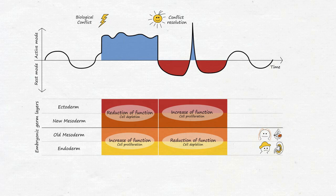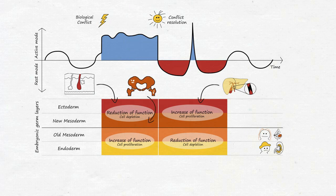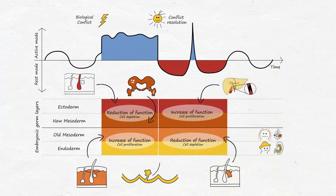Be it a jaundice due to bilirubin backlog because the ectodermal bile duct is swollen due to the process that enables cell proliferation in the conflict-resolved phase. Or hair loss due to reduced function of the ectodermal hair follicles in the conflict-active phase. Or bone loss due to reduced function of the new mesodermal bone in the conflict-active phase. Or melanoma due to functional enhancement of the dermis in the conflict-active phase. Or a purulent pimple due to cell degradation in the sebaceous gland in the conflict-resolved phase. Or a gut polyp due to cell proliferation of the intestinal mucosa in the conflict-active phase, etc., etc.